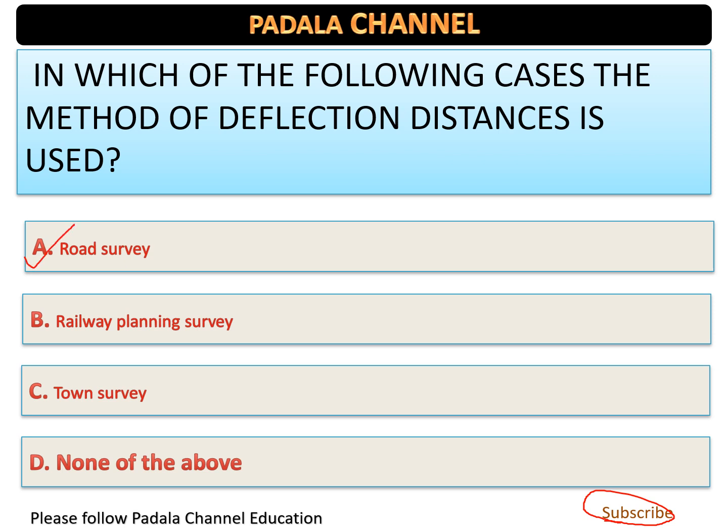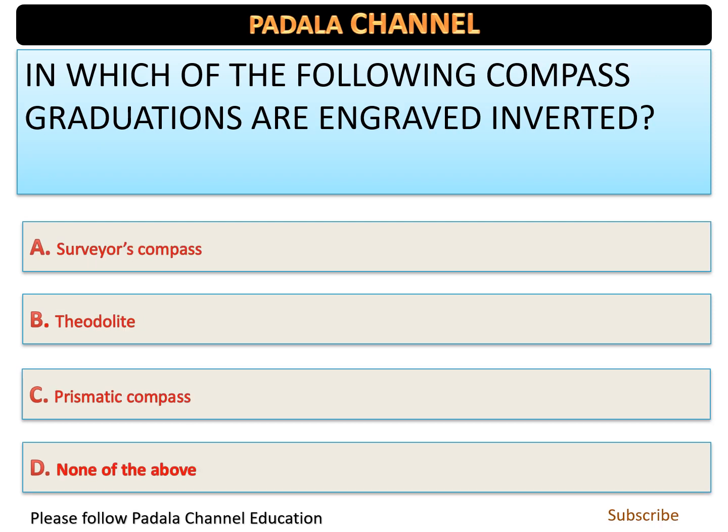In which of the following compass are graduations engraved inverted? Options: A — surveyor's compass, B — theodolite, C — prismatic compass, D — none of the above. The correct answer is option C — prismatic compass.